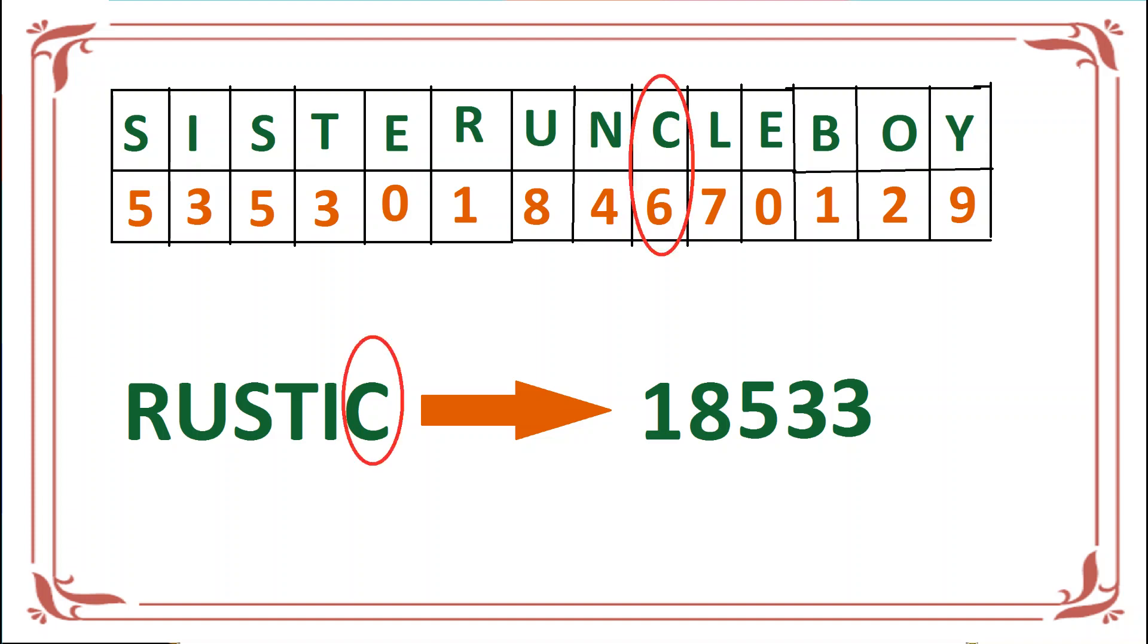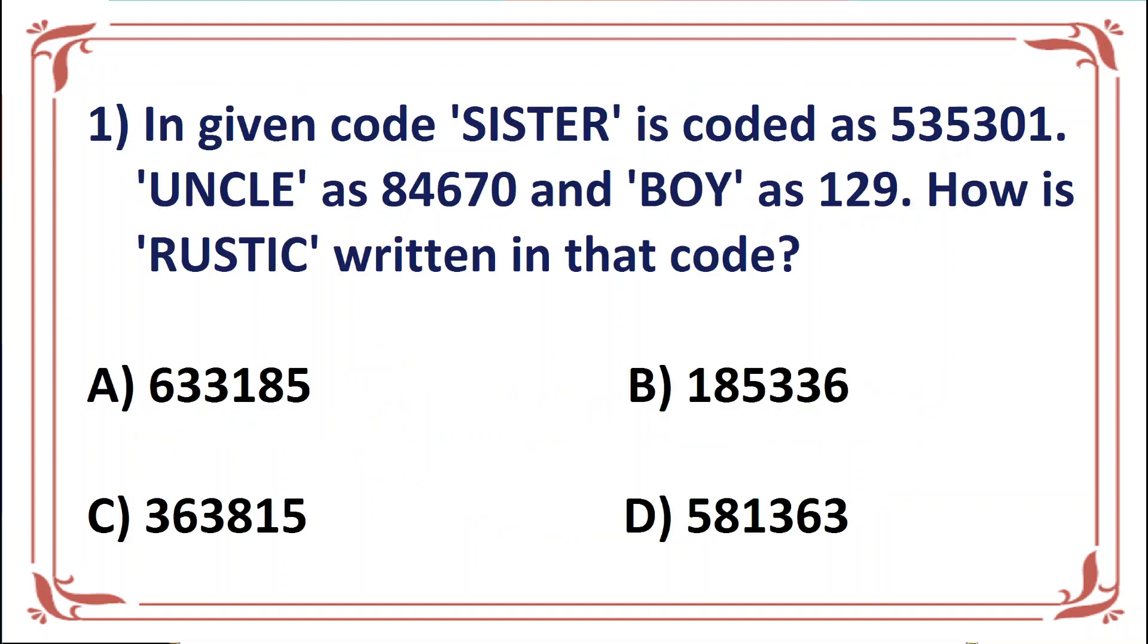So in this way we have coded RUSTIC using numerical values, which is 185336. So from these options, option B is correct.